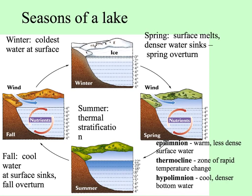In a lake, we can refer to the epilimnion — the surface water — and the hypolimnion — the cool, denser, lower water. A thermocline simply means a zone of rapid temperature change.